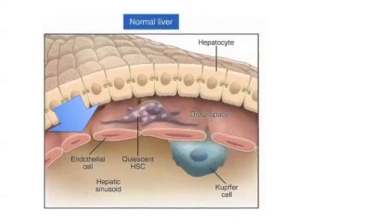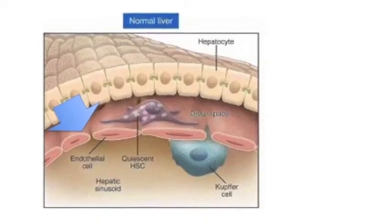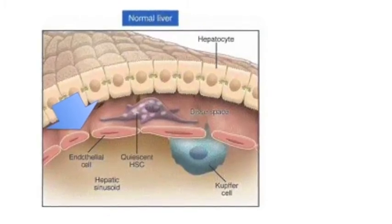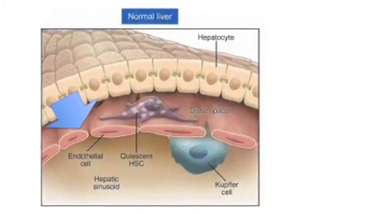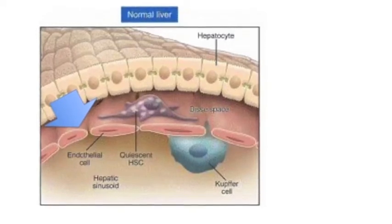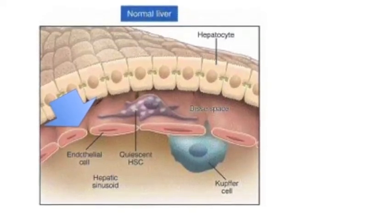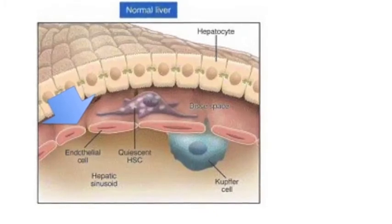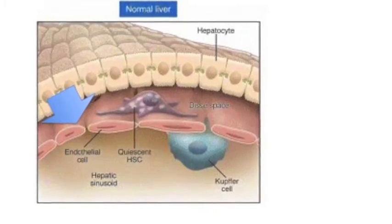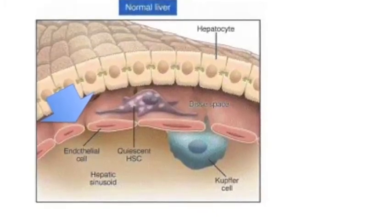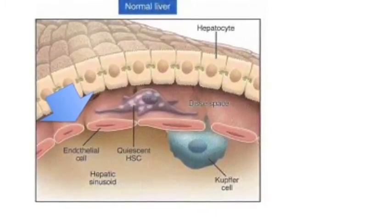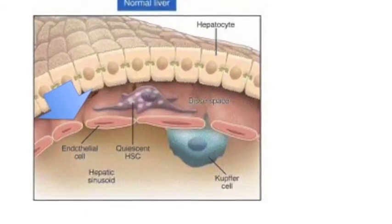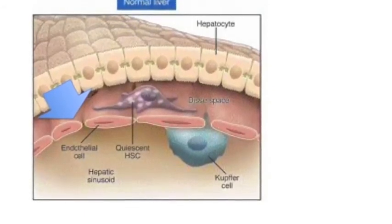The hepatic sinusoid endothelial cells are especially important. Their functions include providing a porous barrier that facilitates the oxygenation of hepatocytes and increases hepatocyte exposure to macromolecules in the portal circulation, clearing colloids and macromolecules from circulation, and providing microcirculation.